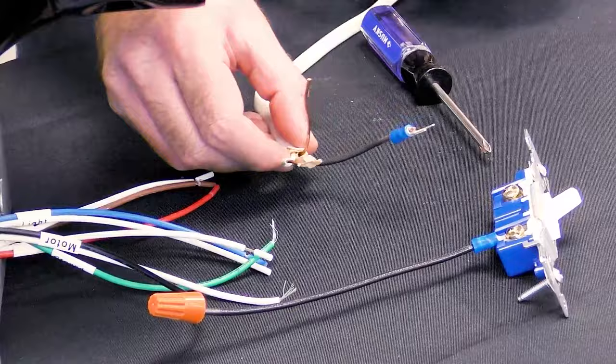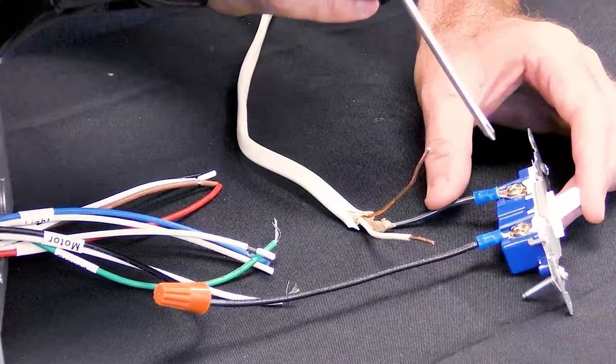Then, attach the hot supply wire to the line side of the switch. Use your Phillips head screwdriver to ensure the connection is tight.